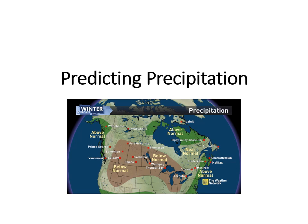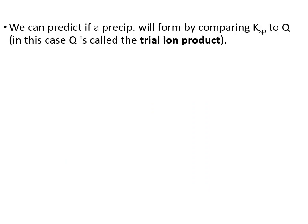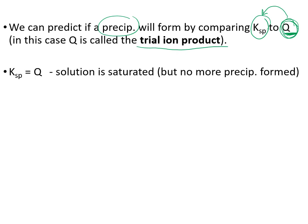We are going to predict if you would get a precipitate under certain circumstances by comparing the Ksp to the Q value. We'll have certain concentrations, figure out what this Q value — the trial ion product — is, then look at it versus Ksp and determine whether it's going to shift left or right, and whether the ions are going to come out of solution or not.